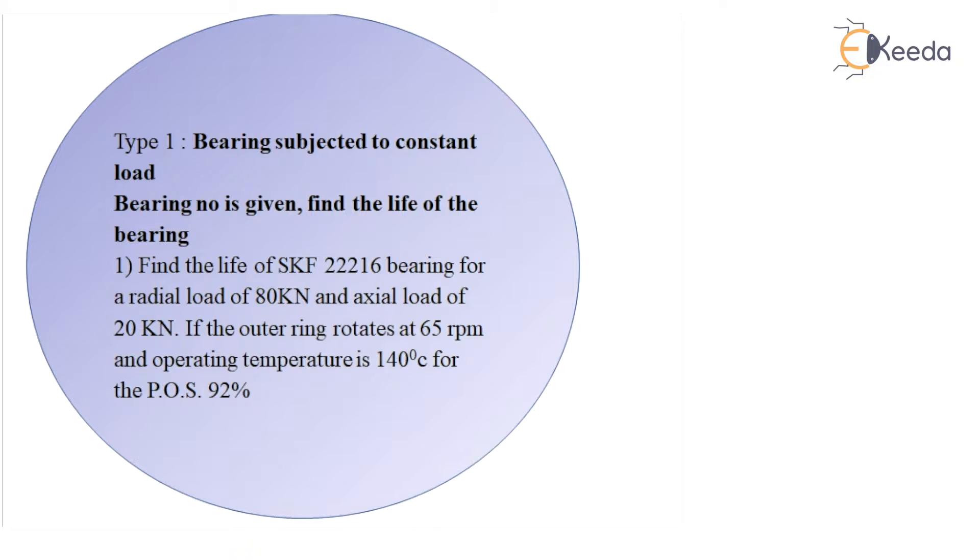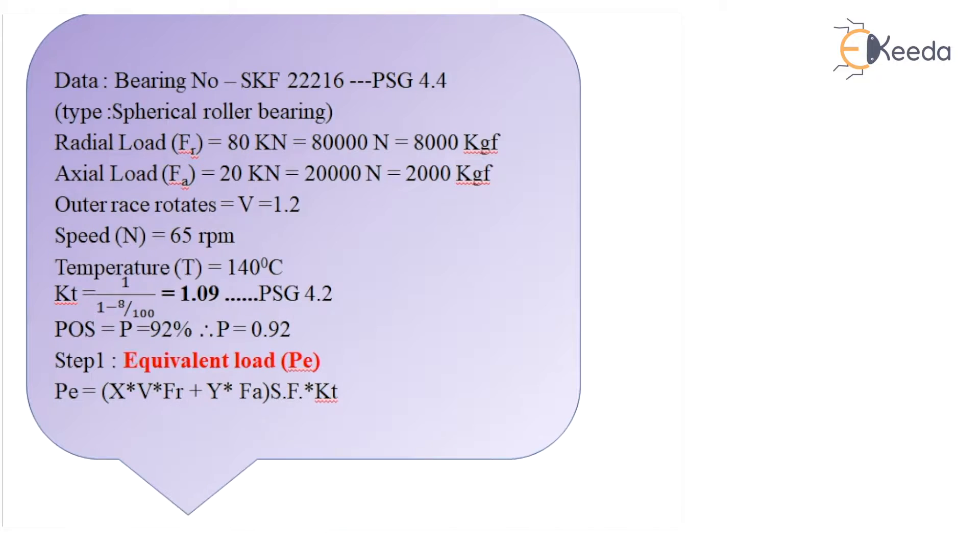Let us now write down the data to this numerical. So the bearing number is SKF 22216. From PSG 4.4 we can say that this is spherical roller bearing. The radial load FR is given as 80 kN, that is 80,000 N which is 8,000 kgf. Axial load FA is 20 kN, that means 20,000 N, that is 2,000 kgf.